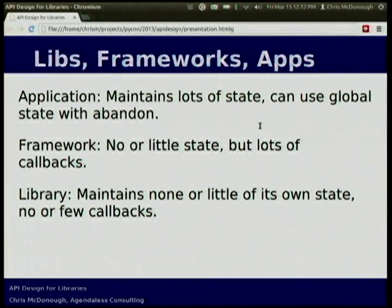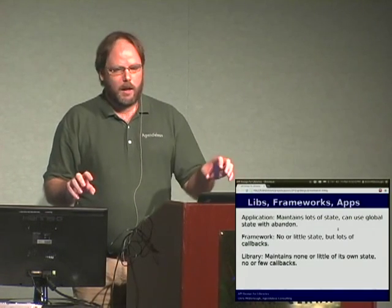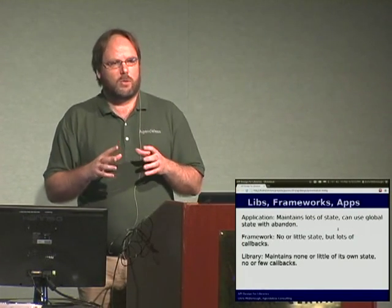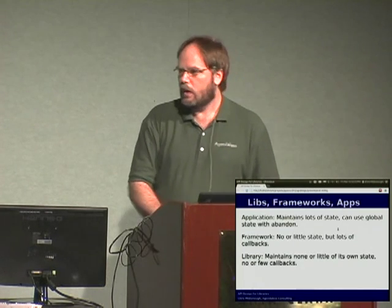I'm going to talk about three kinds of things. There are three different kinds of things that have strangers using code you might write. One is an application — something that can use global state with abandon. A database is global state; module scope stuff is global state. A framework is a step down from that — frameworks usually have no state but call into code via callbacks. A library is neither of those things. A library is something that you call in order to have it do something on your behalf. Usually libraries maintain little or no state and don't have callbacks.